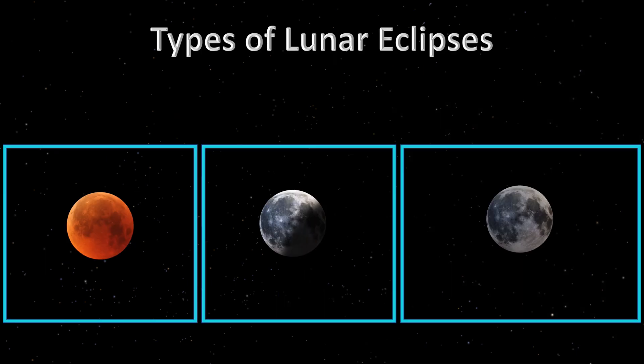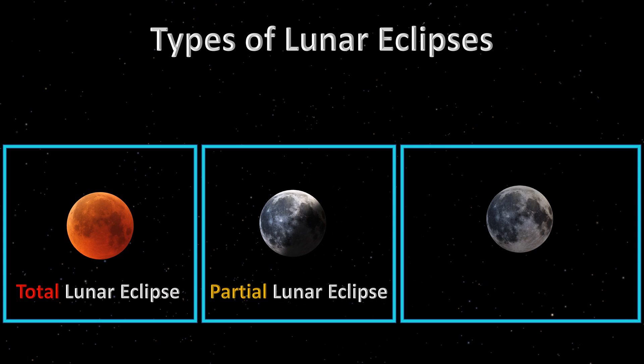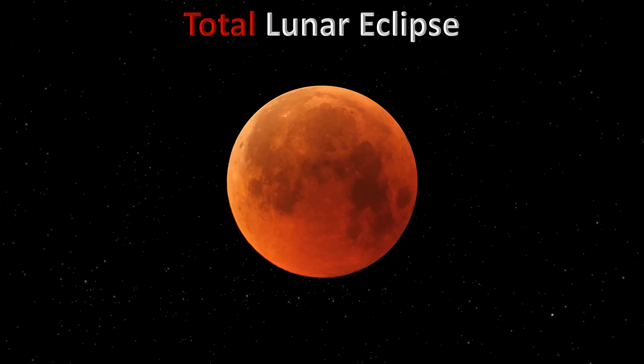There are three types of lunar eclipses: total, partial and penumbral. Let's begin with the most striking one due to its reddish color — the total lunar eclipse.